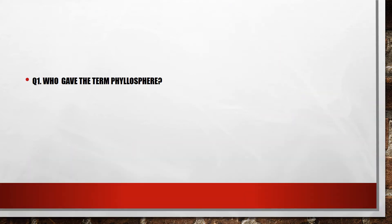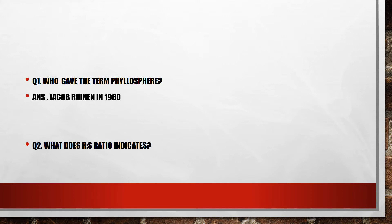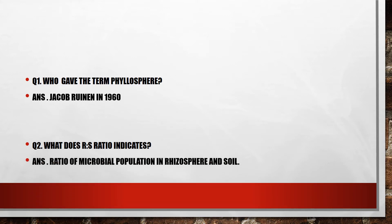First question: who gave the term 'phylosphere'? The answer is Jacob Ruinen in 1960. Second question: what does the RS ratio indicate? The answer is the ratio of microbial population in the rhizosphere versus pure soil.